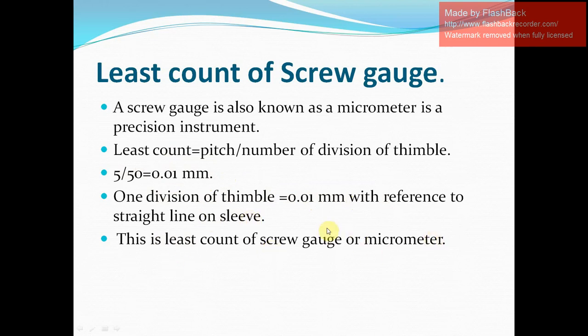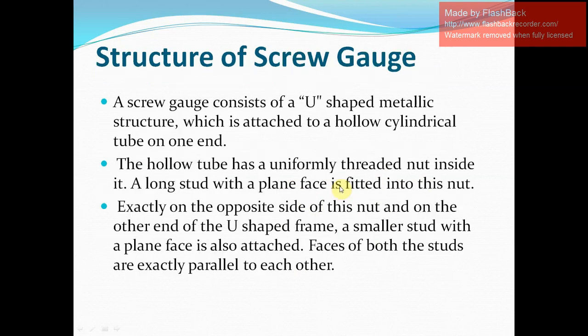So one thing should be clear to all students: the minimum value which can be measured with a screw gauge is 0.01 millimeter, and this is the least count of a screw gauge.